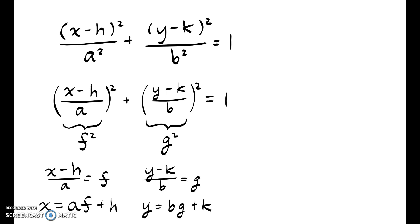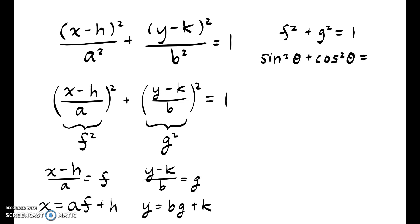Now we find that f squared plus g squared equals 1. When we're thinking about this, we might look at some trigonometric identities — in particular, the Pythagorean identity: sine squared of theta plus cosine squared of theta is equal to 1.